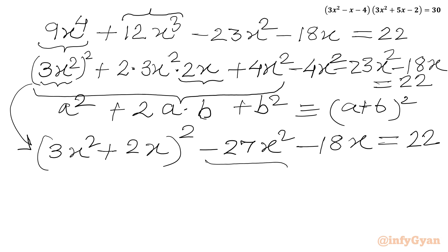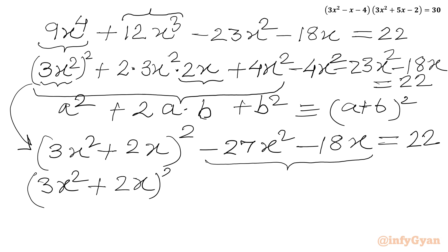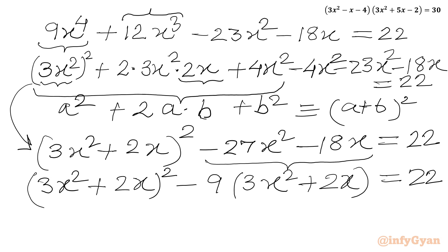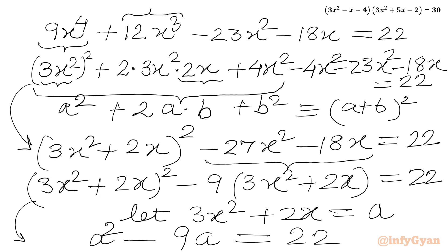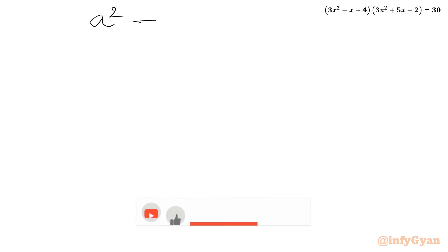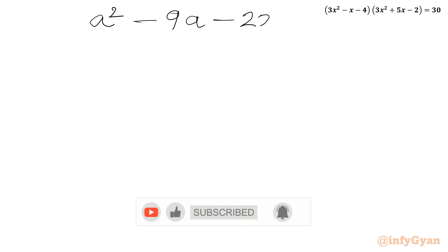So we have (3x² + 2x)² - 9(3x² + 2x) = 22. Now we consider the substitution: let a = 3x² + 2x. Taking all terms to one side, we get a² - 9a - 22 = 0.